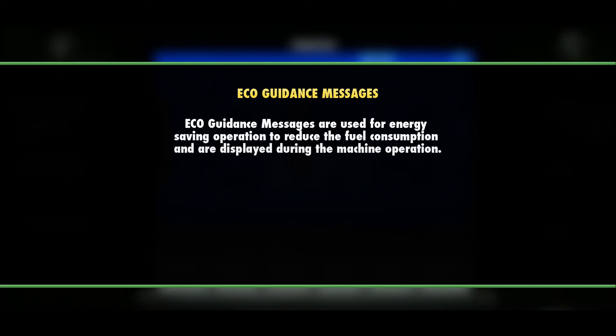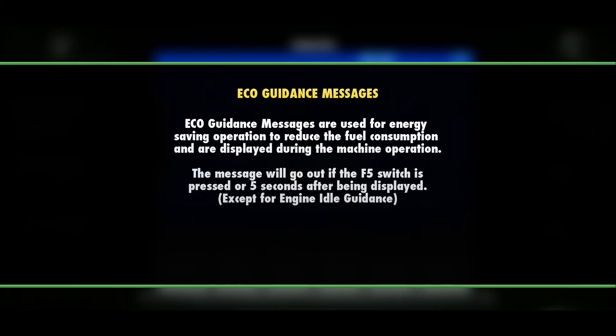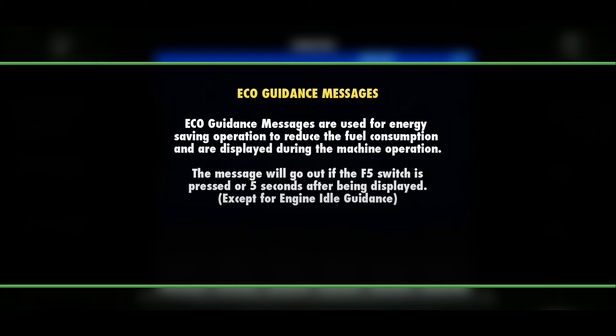The eco-guidance messages are used for energy saving operation to reduce fuel consumption and are displayed during machine operation. The message will go out if the F5 switch on the monitor is pressed, or five seconds after being displayed, except for the engine idle guidance message. There are five possible messages displayed on the monitor.